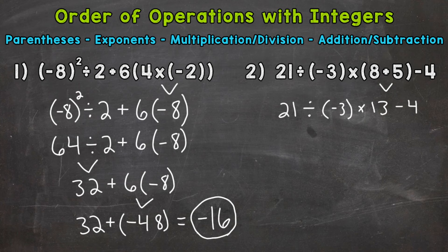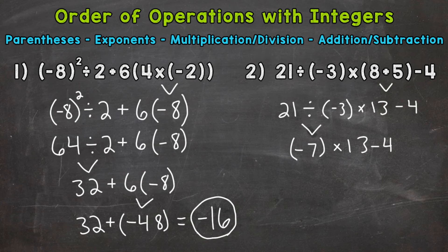Any parentheses where we have something to solve? No. Any exponents? No. Any multiplication or division? Yes, we have both, so solve from left to right. We will do 21 divided by negative 3. We have a positive divided by a negative, so that's going to give us a negative result — negative 7. I'll put it in parentheses to help organize our problem, then bring down everything we did not use.